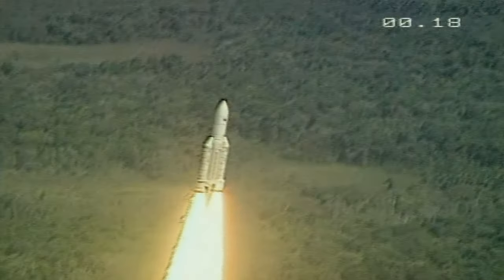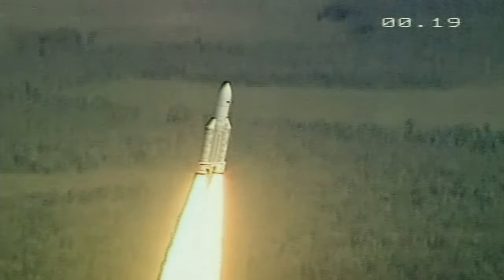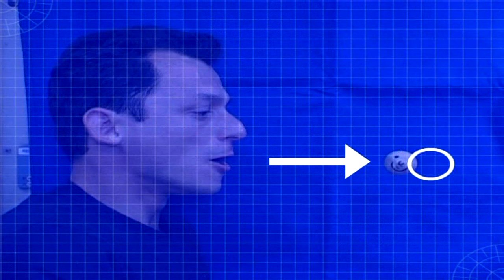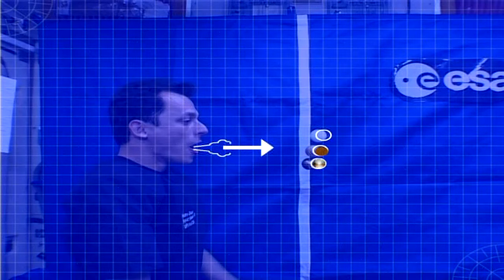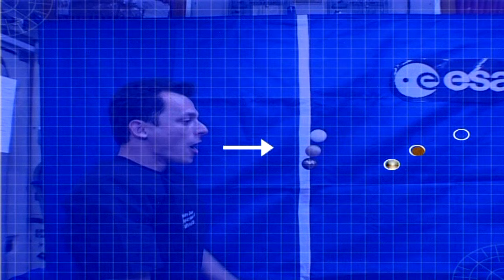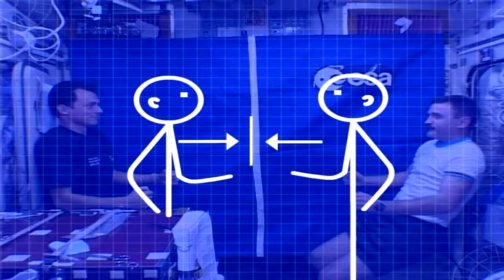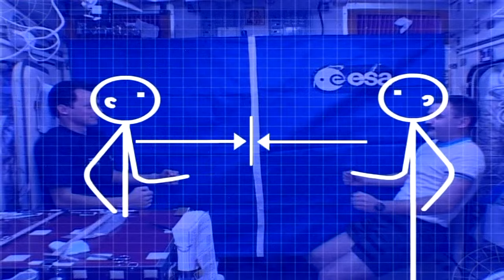Now you know about Newton's three laws of motion. Law one states that objects at rest or in motion stay that way unless a force acts on them. Law two says that force is related to mass and acceleration. And law three says that every action has an equal and opposite reaction.